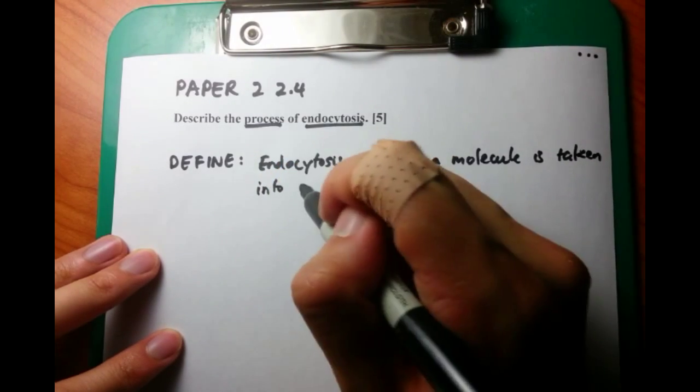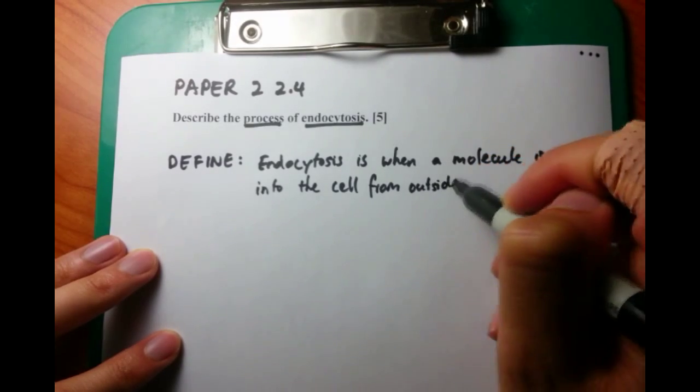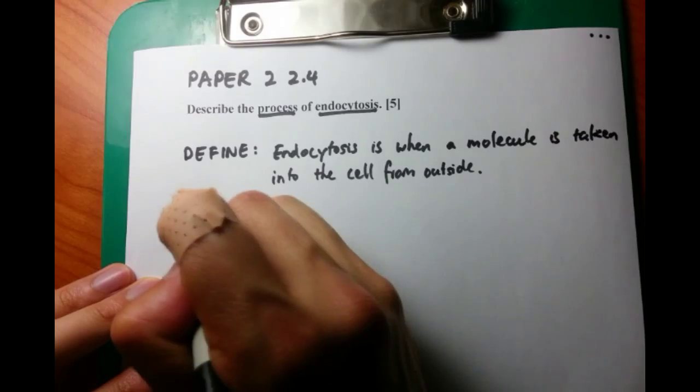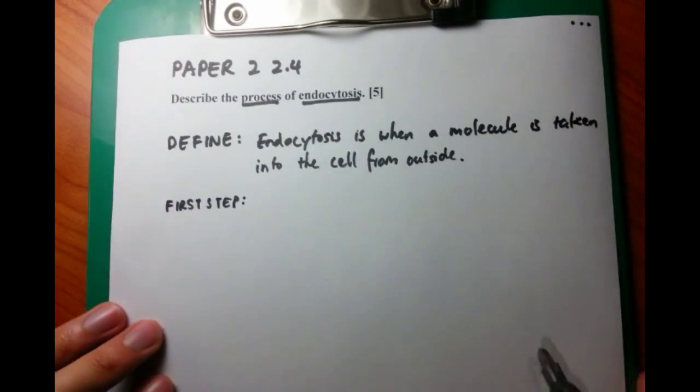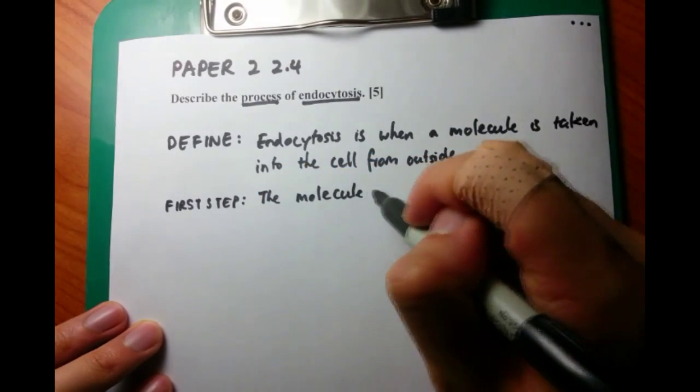The first step: the molecule to be endocytosed needs to be close to the cell that it's going to be taken into. We can write: the molecule to be endocytosed moves close, or adjacent to, the cell membrane.